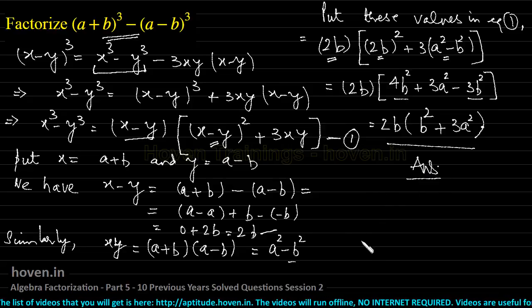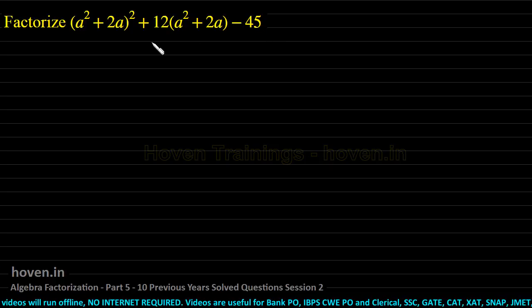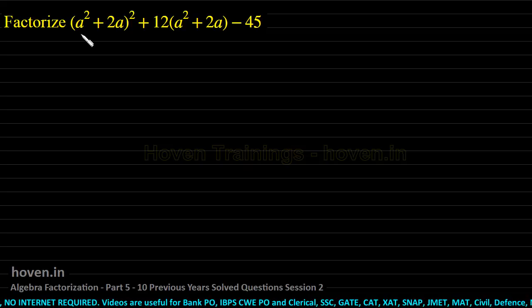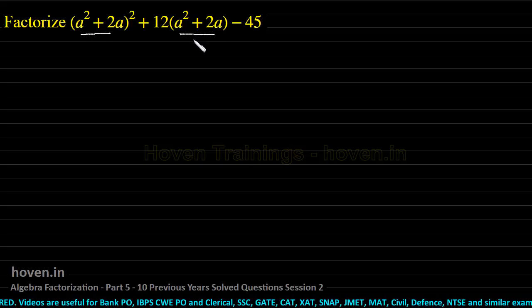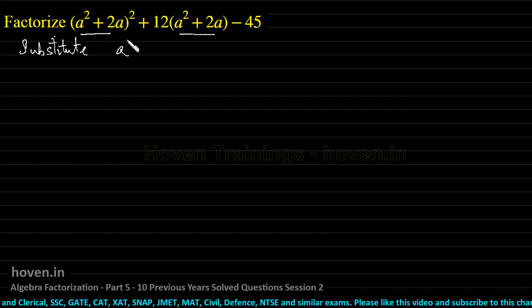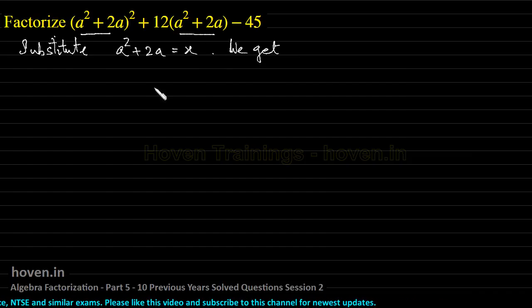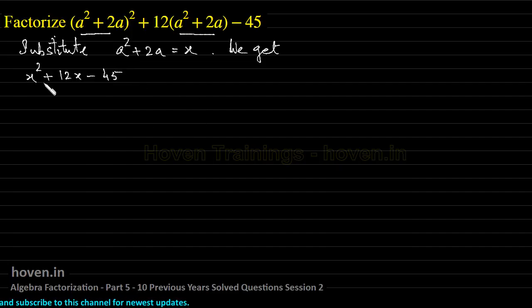Let us move to the next question: factorize (a²+2a)²+12(a²+2a)−45. As we did in the last example, we can see that the term (a²+2a) appears together at every place. So we substitute: let x = a²+2a. Everywhere it simplifies, giving us x²+12x−45.